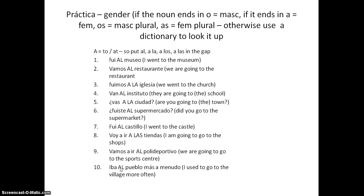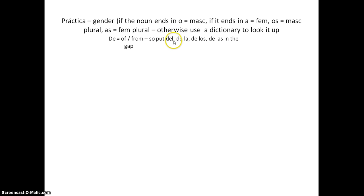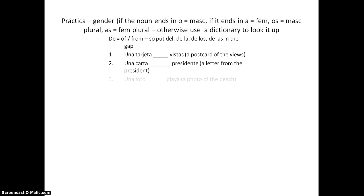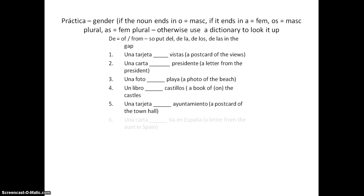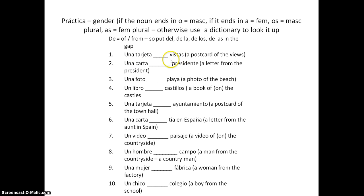Now we're going to have a go at DEL. This time we need to put DEL, DE LA, DE LOS, or DE LAS in the gap. Remember: DE plus EL (masculine THE) squishes to DEL; the rest stay the same. Look at the noun to decide which form to use. Pause it here, have a go, and then we'll go through the answers. We're looking for OF THE or FROM THE.